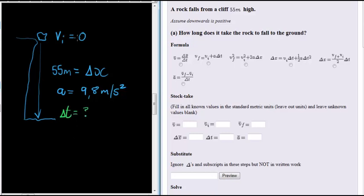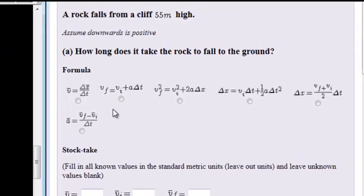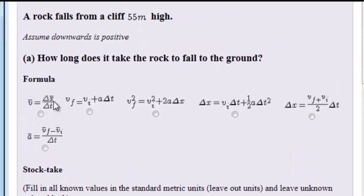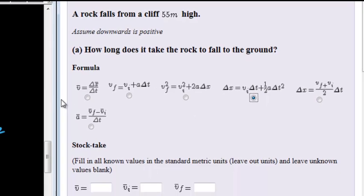Okay, so we need an equation that has initial velocity, change in displacement, acceleration, and change in time. Here we have initial velocity is not in here. Future velocity we don't have. Okay, here's displacement, change in time, initial velocity, and acceleration. So this seems to be the correct equation to use.